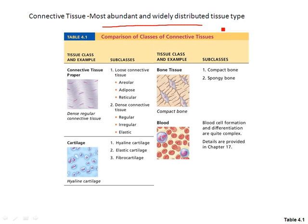When we talk about connective tissue, we divide it into basically four classes: connective tissue proper, cartilage, bone, and blood. Connective tissue proper includes loose connective tissue and dense connective tissue. Under loose, we have areolar, adipose — which you know as fat — and reticular. Under dense connective tissue, we have regular, irregular, and elastic.